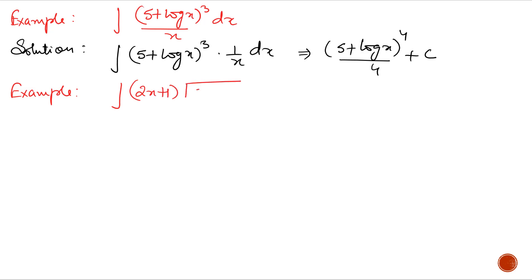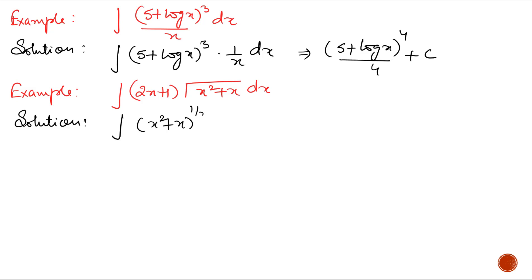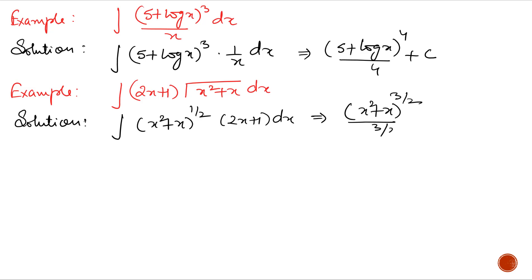Next example: integrate (2x + 1) multiplied by √(x² + x) dx. Rewriting, this is (x² + x)^(1/2) multiplied by (2x + 1). The derivative of (x² + x) is present alongside the function. So the answer is (x² + x)^(3/2) / (3/2) + c.